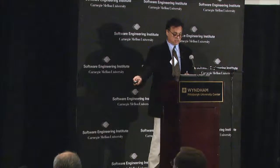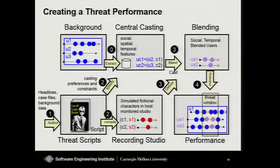Let me walk through the production process concretely. In the upper left-hand corner is our background data — the ground truth coming in that's been de-identified. In the lower left, we create stories. These are like screenplays; we're actually using professional screenplay software now, which is interesting and useful. Where do stories come from? They come from our domain expert. They could come from case files — which are already, interestingly, in narrative form — from headlines, which we've used, and also from background data itself, from the fabula.